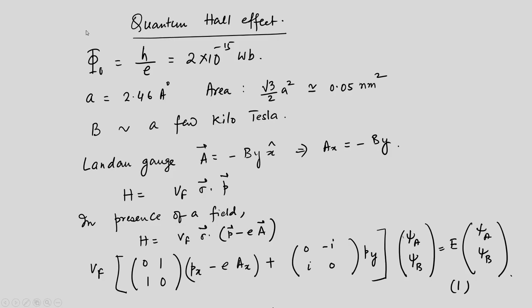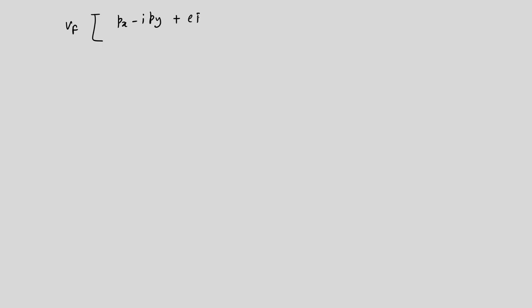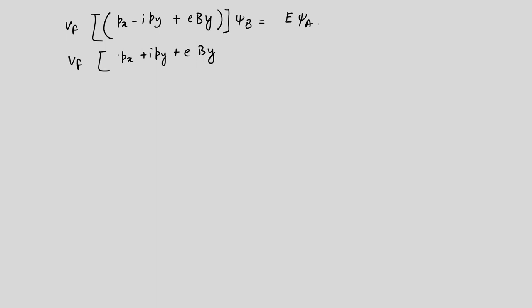We can explicitly write the two equations. Equation 2a: v_F (p_x − ip_y + eBy) ψ_B = E ψ_A. Equation 2b: v_F (p_x + ip_y + eBy) ψ_A = E ψ_B. These two equations come directly from the 2×2 matrix equation.